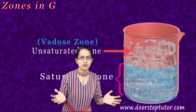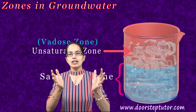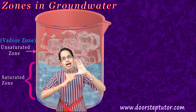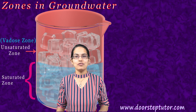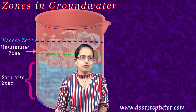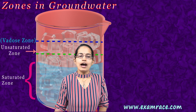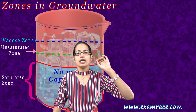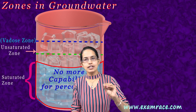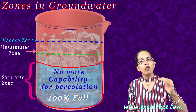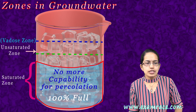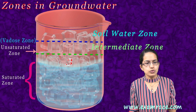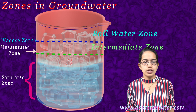We already talked about the saturated and the unsaturated zone with the help of the cup and ice cubes demonstration. Now this unsaturated zone itself can be further subdivided into three categories. You have the saturated zone, then you have the unsaturated zone — which is 100% at the ability of holding water — and this unsaturated zone can be divided into three components: the first is the soil water zone, the next is an intermediate zone, and nearest to the saturated zone is the capillary fringe.